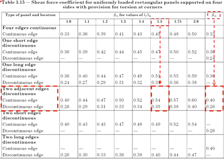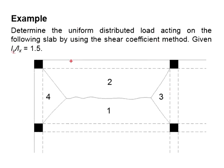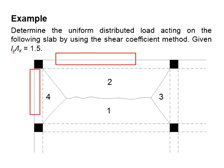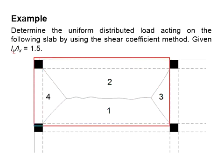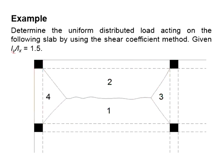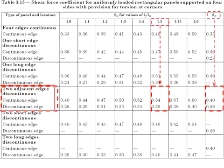First, you need to refer to Table 3.15 in BS. By looking at the slab, you know this side is discontinuous and this side is discontinuous. Both sides are adjacent to each other. Therefore, the slab is considered as two adjacent edge discontinuous, which is this one.